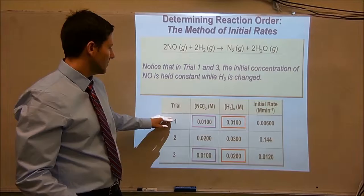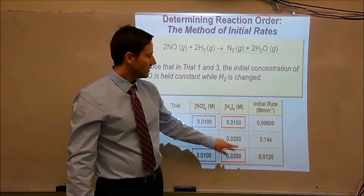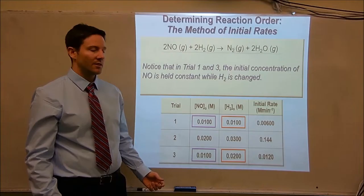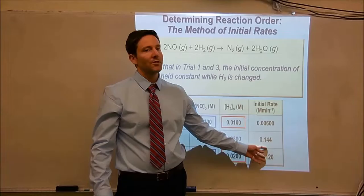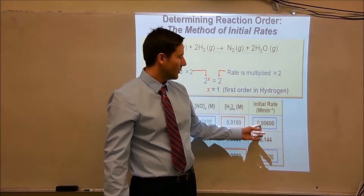If you take a look at experiments one and three, if the initial concentration of nitric oxide is kept the same but you double the initial concentration of hydrogen going from experiment one to experiment three, take a look at what happens to the initial rate of the reaction. The concentration of nitric oxide stayed the same, hydrogen doubled, and the rate doubles.